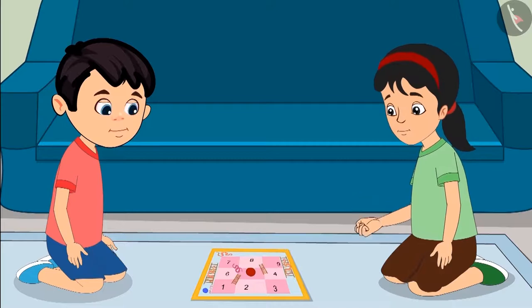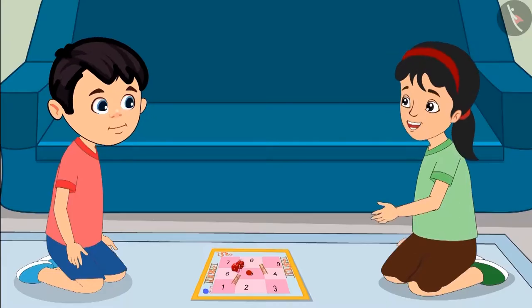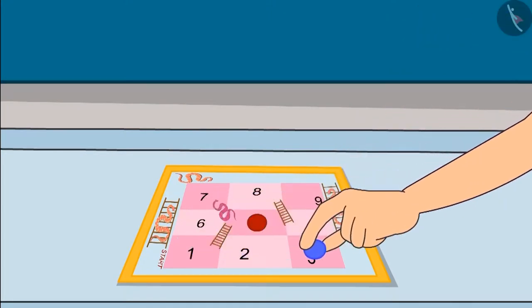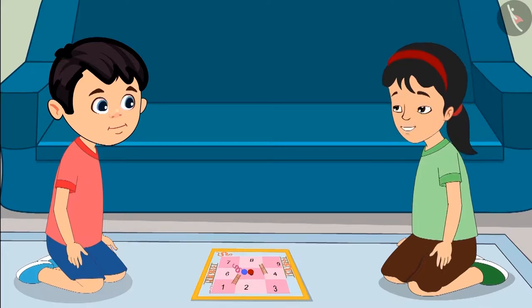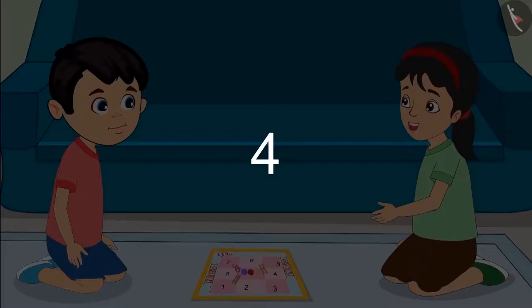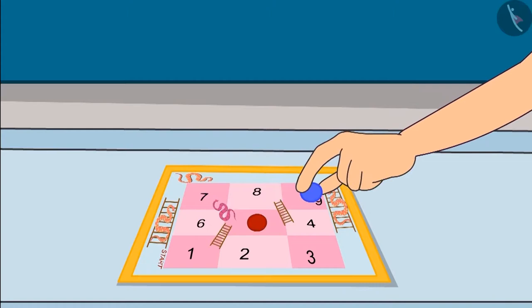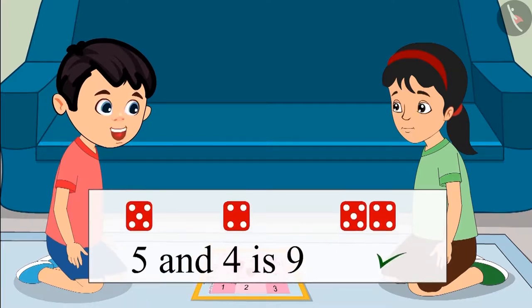Now Pinky rolls both the dice. 5 comes on the first dice. And 4 comes on the second dice. It is 5 and 4. First, I am moving my piece 5 places forward. 1, 2, 3, 4 and 5. My piece is on number 5. So now I will move it 4 places forward. 1, 2, 3 and 4. Now my piece has come to number 9. That means adding 5 and 4 gave us 9.